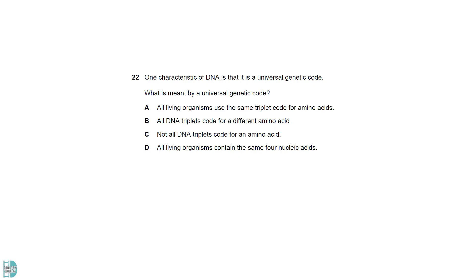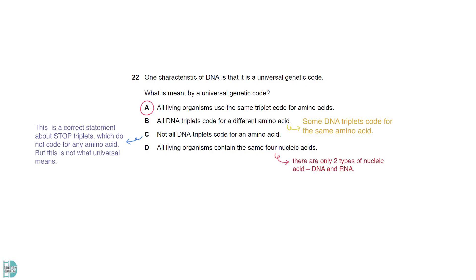Universal refers to the fact that different organisms use the same triplet for the same amino acid. B is incorrect as some DNA triplets code for the same amino acid. Furthermore this has nothing to do with the term universal. C is a correct statement as some triplets are stops which do not code for any amino acid. But again this is not what universal means. D is wrong as there are only two types of nucleic acid DNA and RNA.